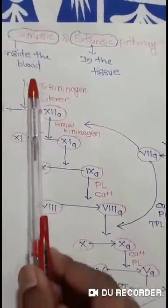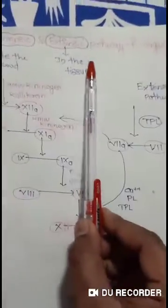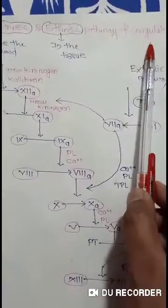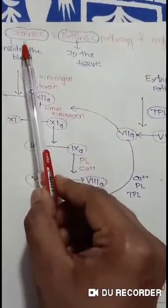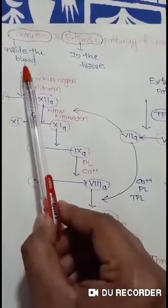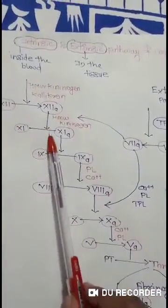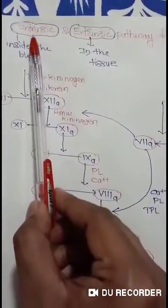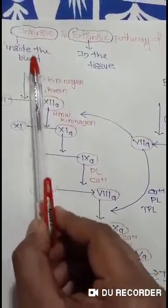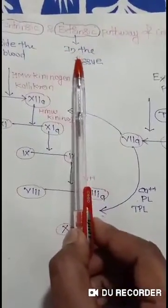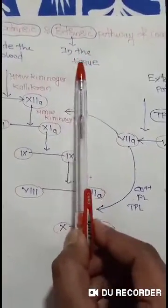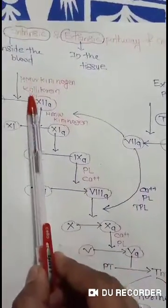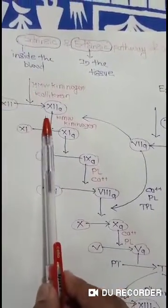Today, we are going to discuss Intrinsic and Extrinsic Pathway of Coagulation. As the name suggests, Intrinsic Pathway means all the factors which are present inside the blood — that's why the name is Intrinsic Pathway. Extrinsic Pathway occurs in the tissue — that's why the name is Extrinsic Pathway. Now we will see first the Intrinsic Pathway of Coagulation.